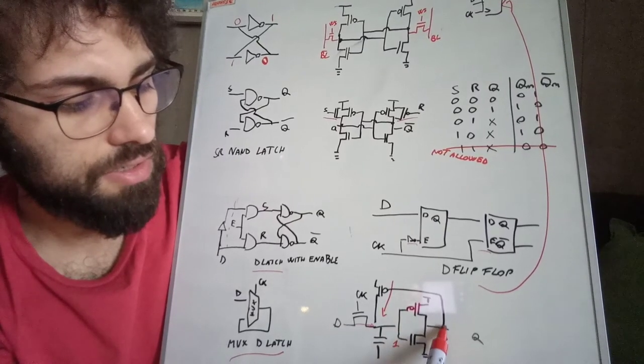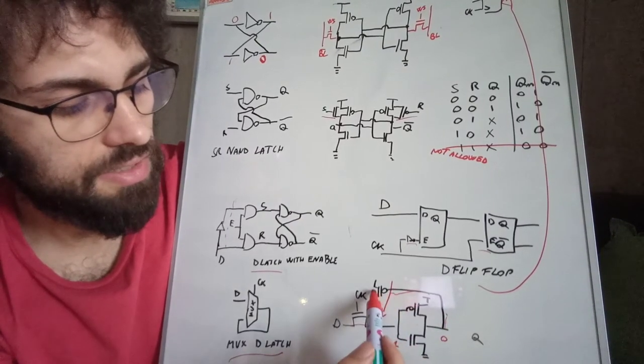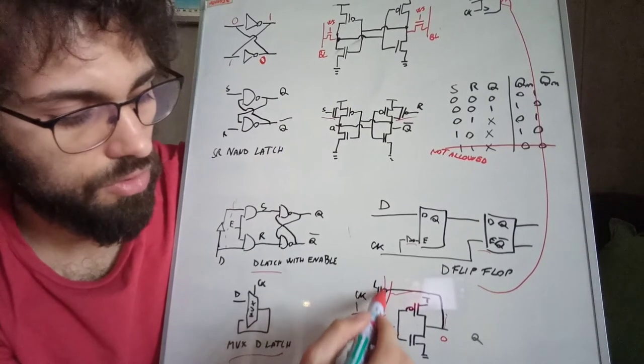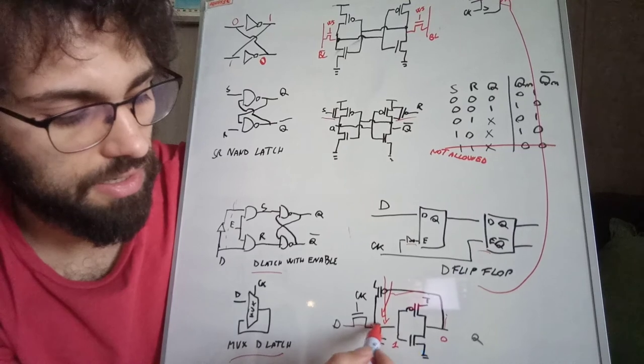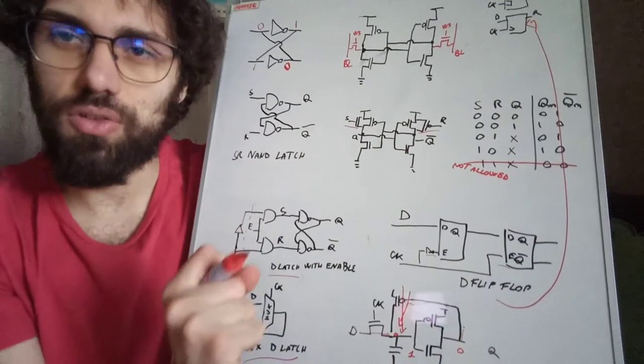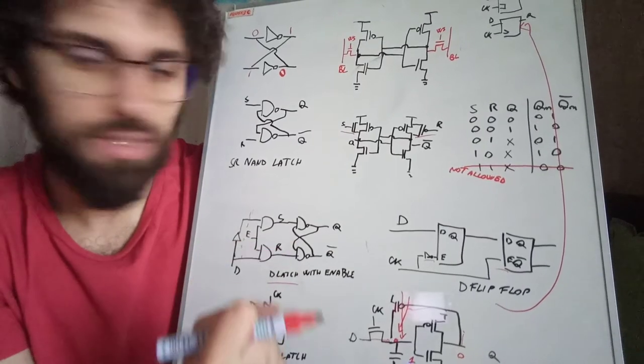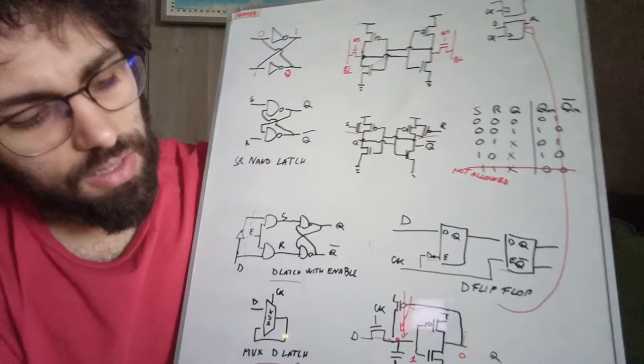So here we have a weak one. At the output here we have a strong zero because this is an inverter, and this zero makes this PMOS transistor conduct. So we restore the one at this node so that D becomes strong again and is able to fully drive the inverter. This is an example of D latch.